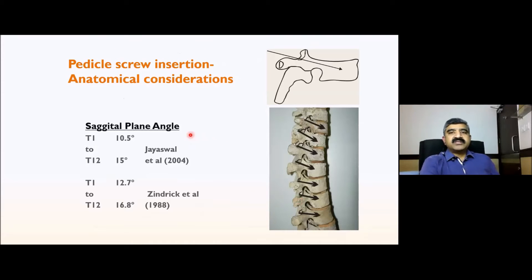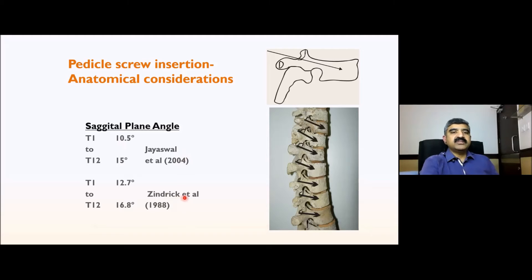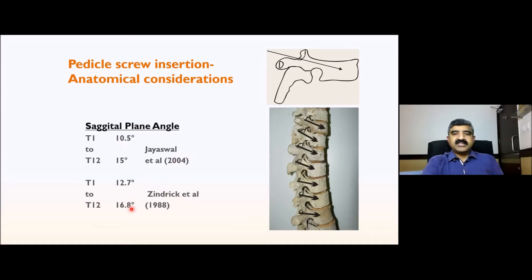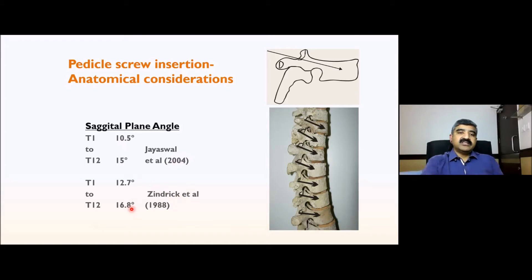Pedicle screw insertion in the sagittal plane is usually around 10 to 15 degrees according to an Indian study from AIIMS, from Professor J. Swalz's unit. The Caucasian population is around 12 to 18 degrees. The sagittal plane angle increases as you go upward toward T1 and then decreases as you come down toward T12.